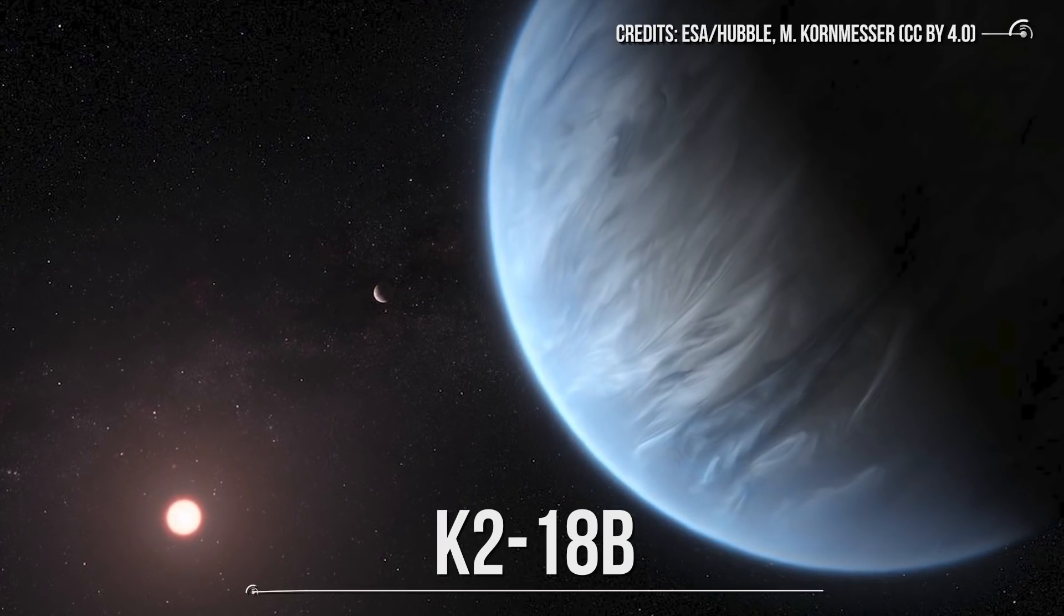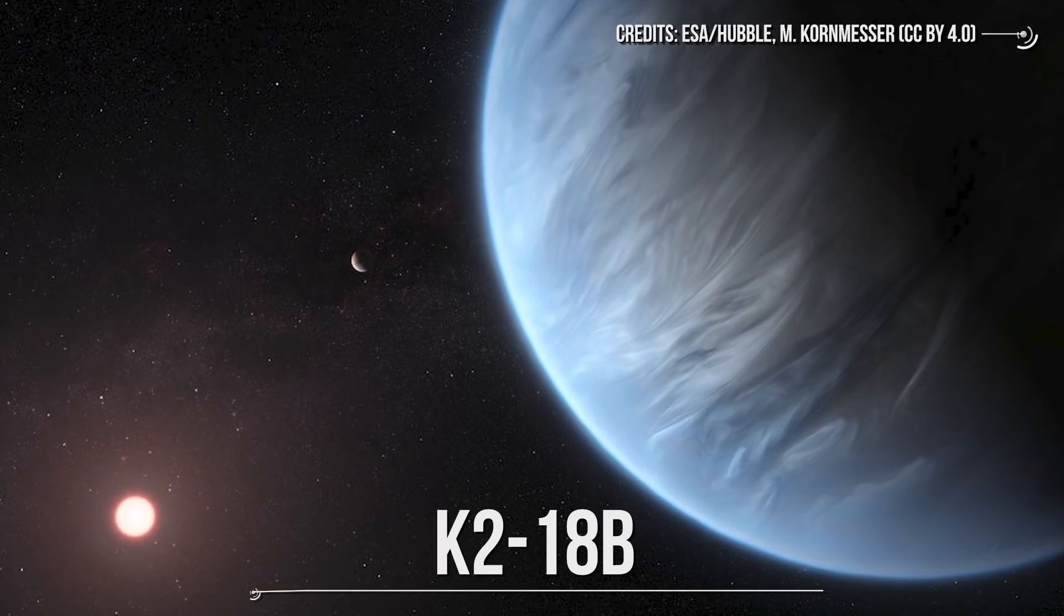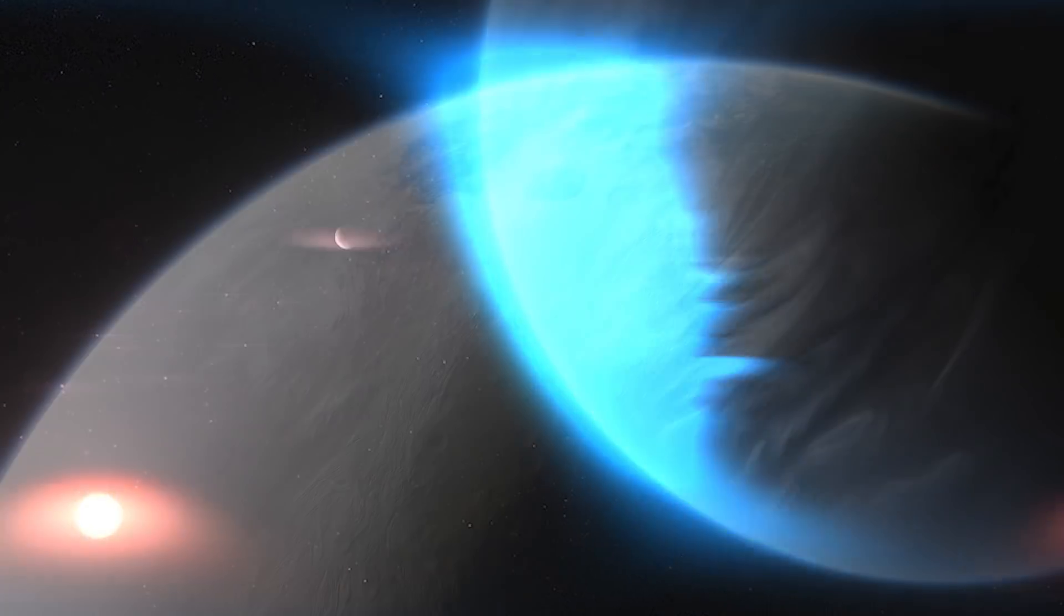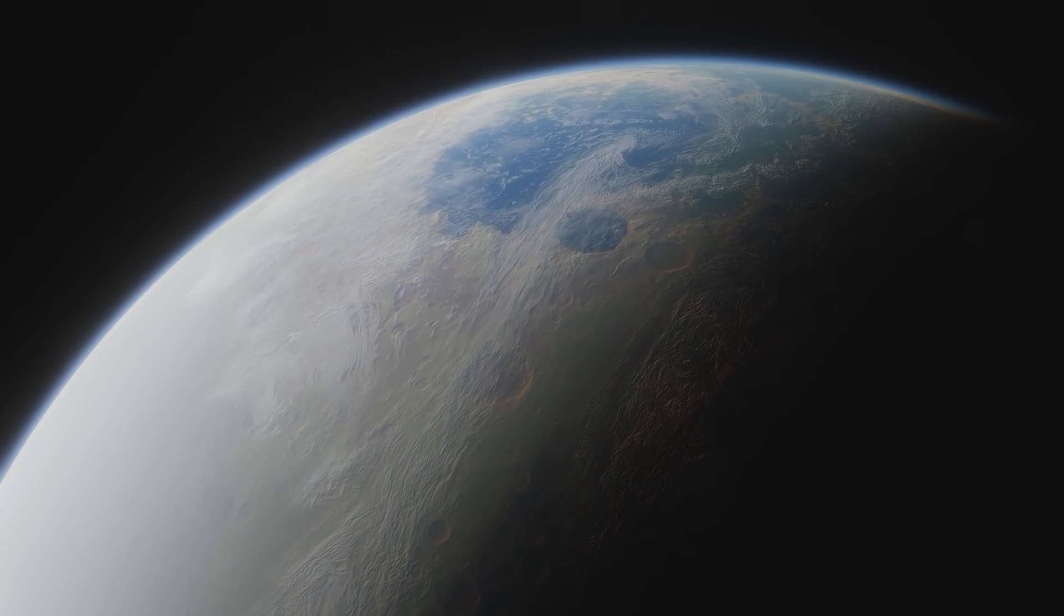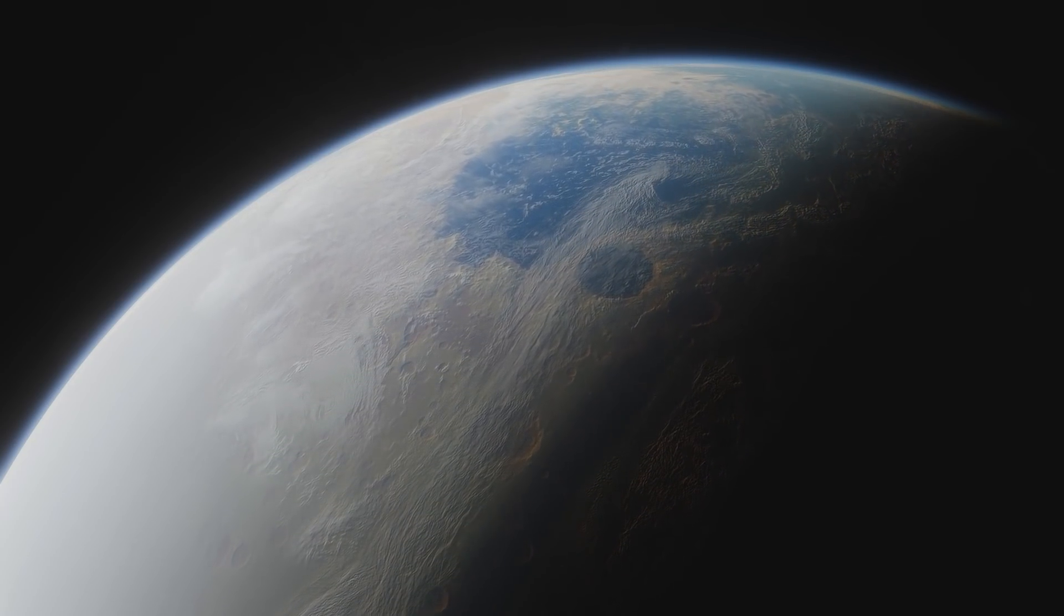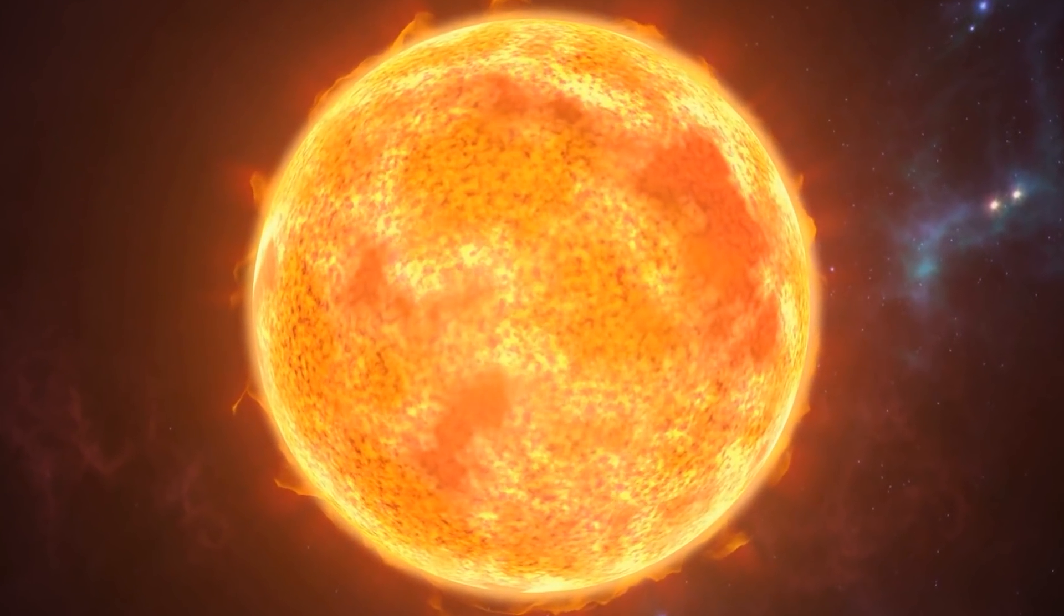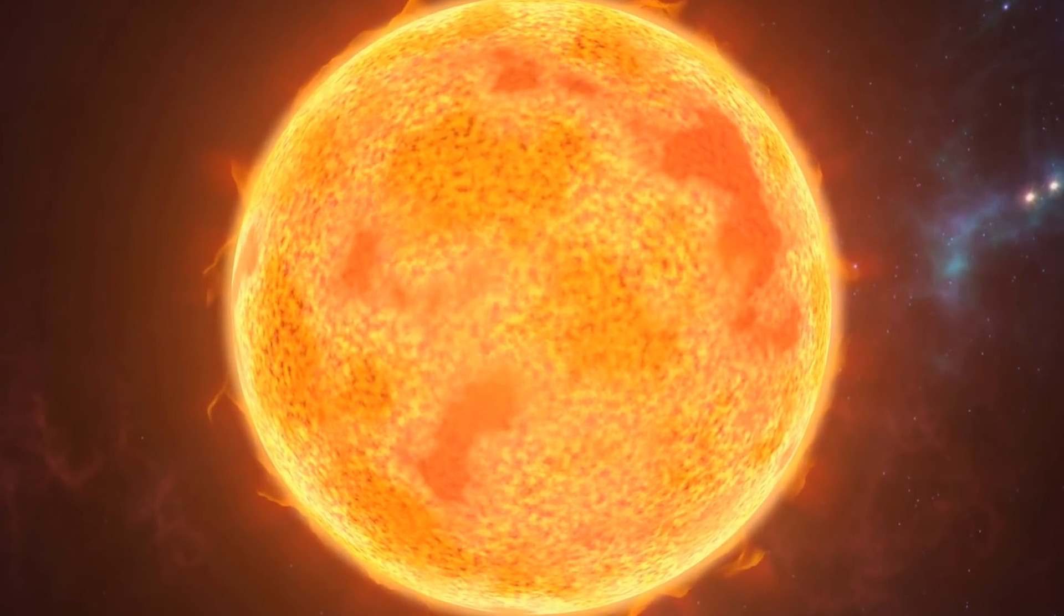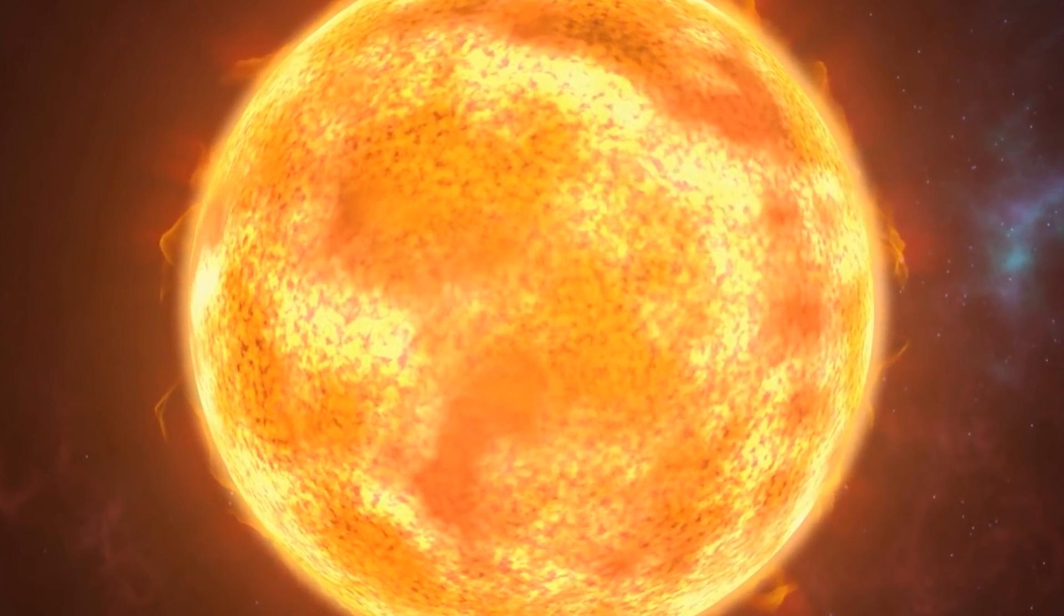One such exoplanet discovered by Kepler that has recently generated excitement among researchers is called K218b. In September 2019, two scientific teams independently announced that they found signs of liquid water in the planet's atmosphere, situated 124 light-years away from Earth. K218b is about eight times the mass of Earth and three times as big. It orbits a main sequence red dwarf star called K218.